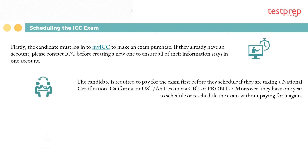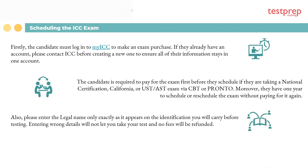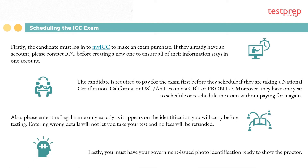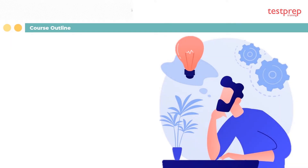Second, you are required to pay for your exam before you schedule, if you are taking a national certification, California, or UST/AST exam via CBT or pronto. You have one year to schedule or reschedule your exam without paying again. Third, please enter your legal name only, exactly as it appears on the identification you will carry before testing — entering wrong details will not let you take your test and no fees will be refunded. Fourth, you must have your government-issued photo identification ready to show the proctor.